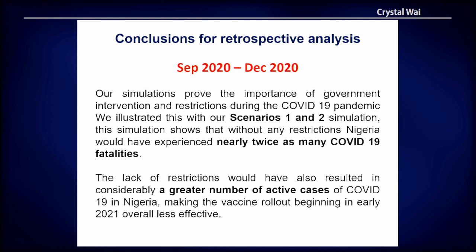In conclusion, when there are no restrictions or interventions, Nigeria experienced nearly twice as many deaths, and the vaccine rollout would not have been as effective in 2021. This emphasizes how important it is that governments intervene with restrictions during pandemics.